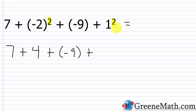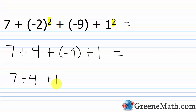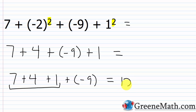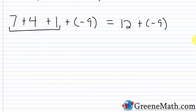One squared is one times one, which is one. Now we just have addition. When adding integers, it's usually easier to add numbers with the same sign first. So we reorder: 7 + 4 + 1, then + (-9). Seven plus four is eleven, eleven plus one is twelve. Twelve plus negative nine is the same as twelve minus nine, which is three. The answer is three.